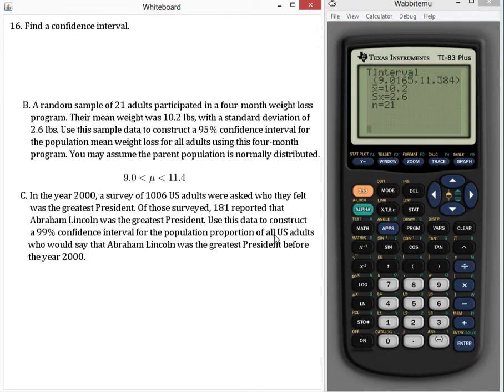C. In the year 2000, a survey of 1,006 US adults were asked who they felt was the greatest president. Of those surveyed, 181 reported that Abraham Lincoln was the greatest president. Use this data to construct a 99% confidence interval for the population proportion of all US adults who would say Abraham Lincoln was the greatest president before the year 2000.